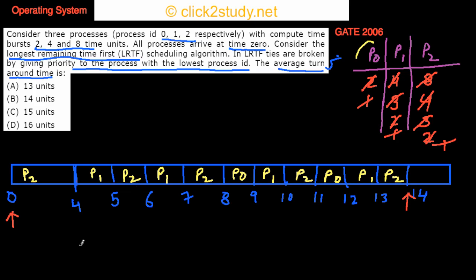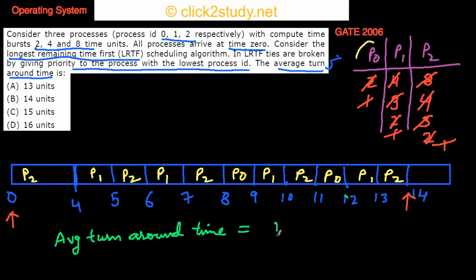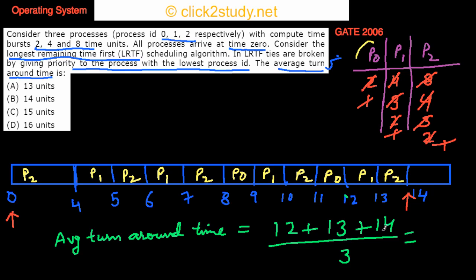To find the average turnaround time, we take the average of all individual turnaround times. All processes arrive at time 0, so turnaround time equals completion time. P0's turnaround time is 12, P1's is 13, and P2's is 14. The average is (12 + 13 + 14) / 3 = 39 / 3 = 13, which is the correct answer.